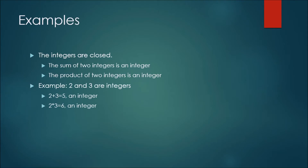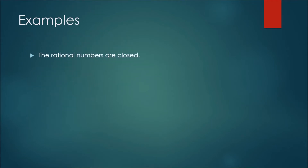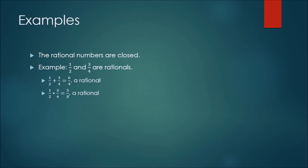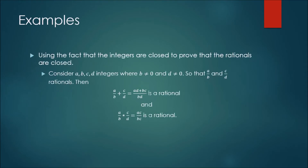An example of this is the integers two and three: two plus three equals five, an integer, and two times three is six, also an integer. The rationals are also closed. Consider two rationals, one-half and three-fourths: one-half plus three-fourths equals six-fourths, and one-half times three-fourths equals three-eighths — both rational numbers.